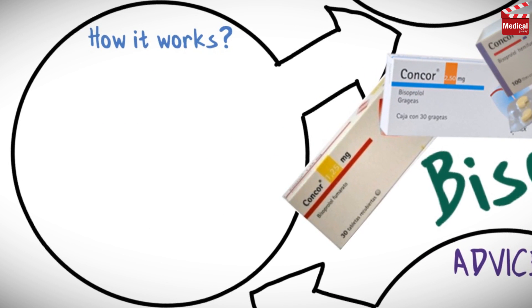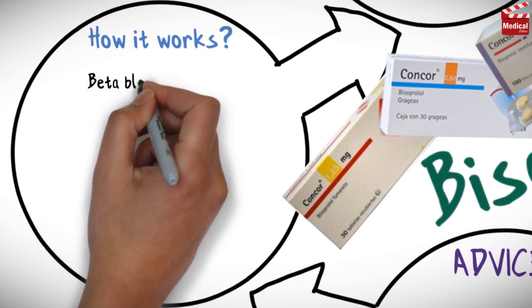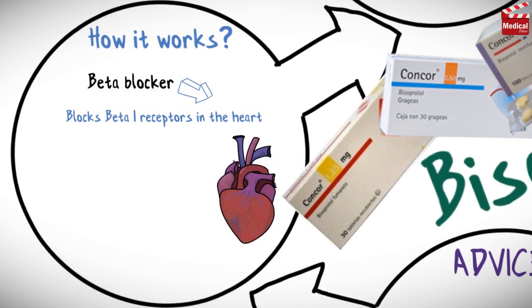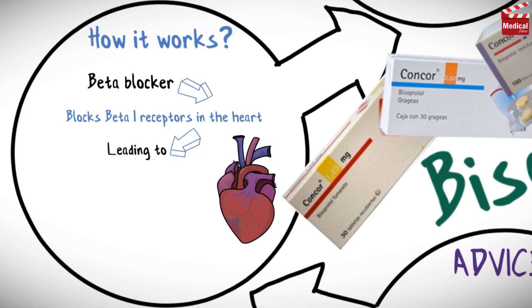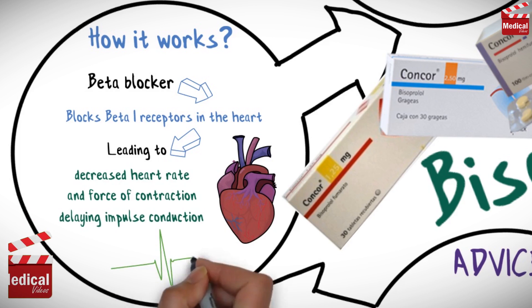Bisoprolol belongs to a category of drugs called beta blockers. It works mainly by blocking beta-1 receptors in the heart, leading to decreased heart rate and force of contraction, and delaying impulse conduction.